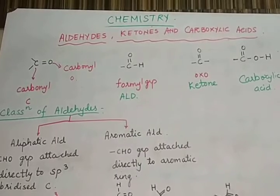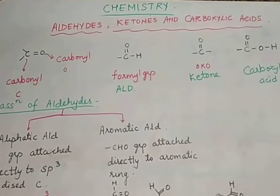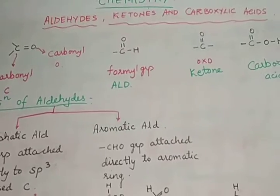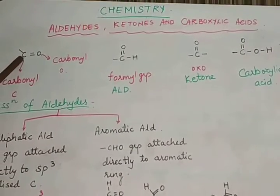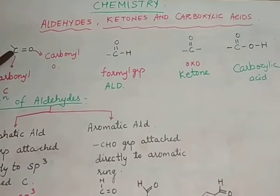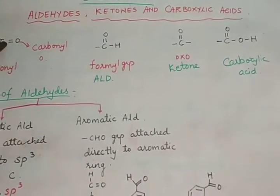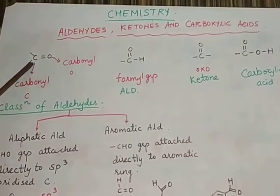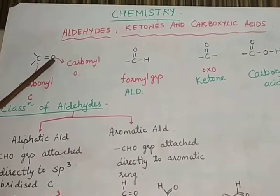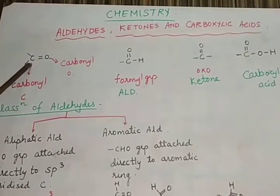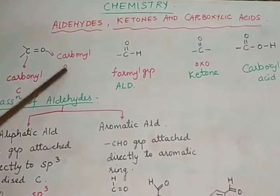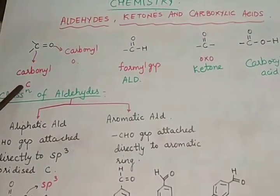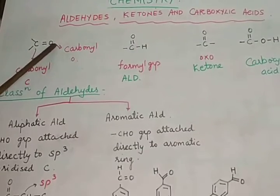Why are all three compounds given together in the chapter? The reason is all three compounds contain a carbonyl group. Carbonyl group is C double bonded to O. Carbon is tetravalent, and this C=O group is called the carbonyl group. The oxygen doubly bonded to carbon is carbonyl oxygen, and the carbon doubly bonded to oxygen is called carbonyl carbon.